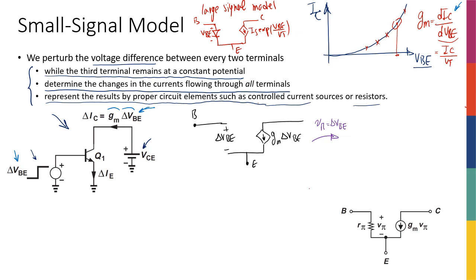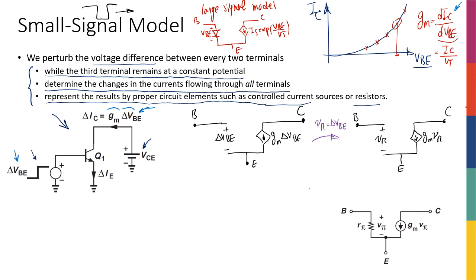So my model has a base terminal, Vpi across the input, a GM·Vpi current source connected to the collector, and an emitter. The 'pi' notation comes from the fact that this model looks like an inverted Greek letter pi. Vpi is simply a convention for delta VBE — nothing more.